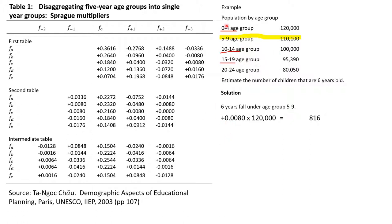Coming to the table, we look under the row for age six. For the preceding group F minus one (0 to 4), we trace across to find the multiplier: that gives us +0.0080. We multiply this by the population in that group, which is 120,000, giving us 816. That is how we arrive at the first value.